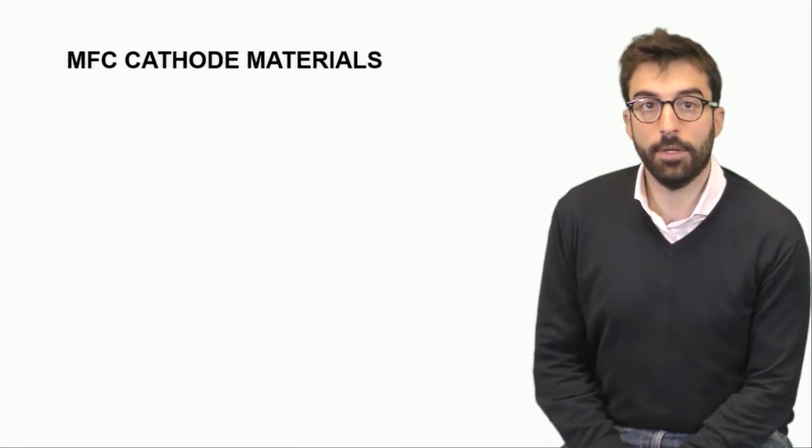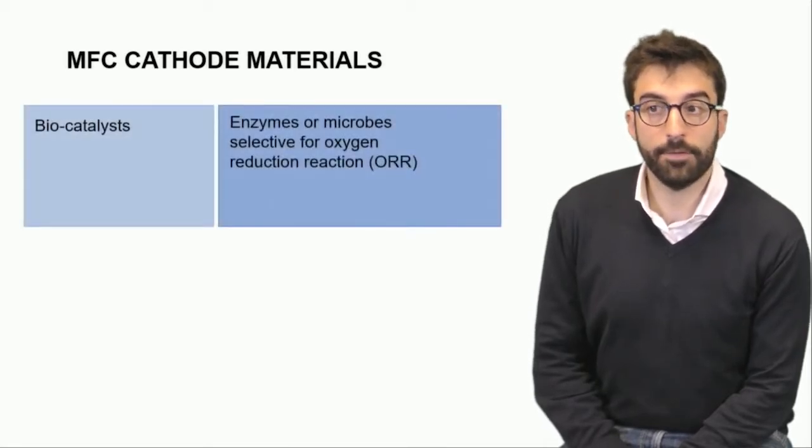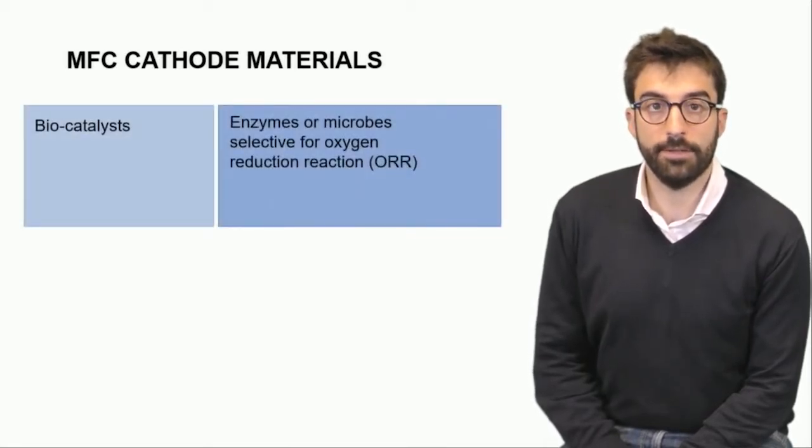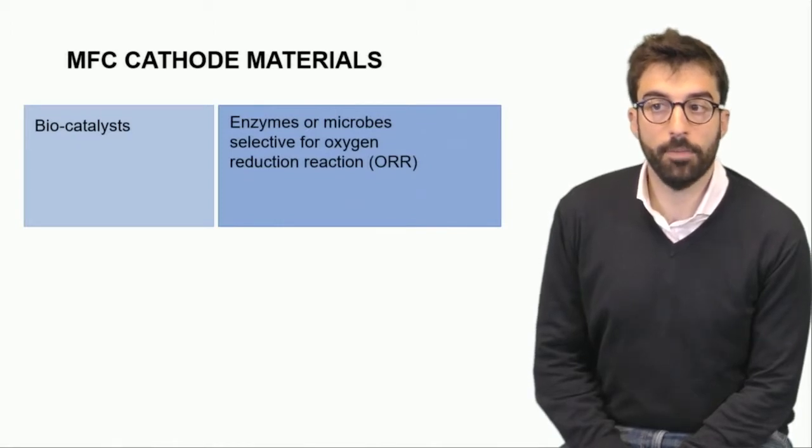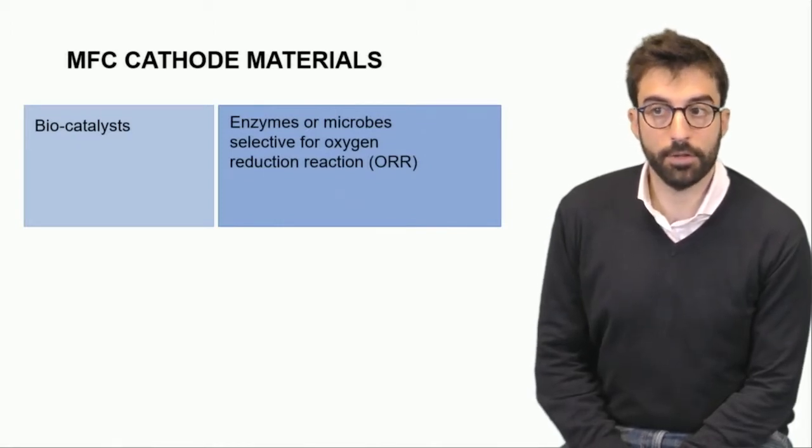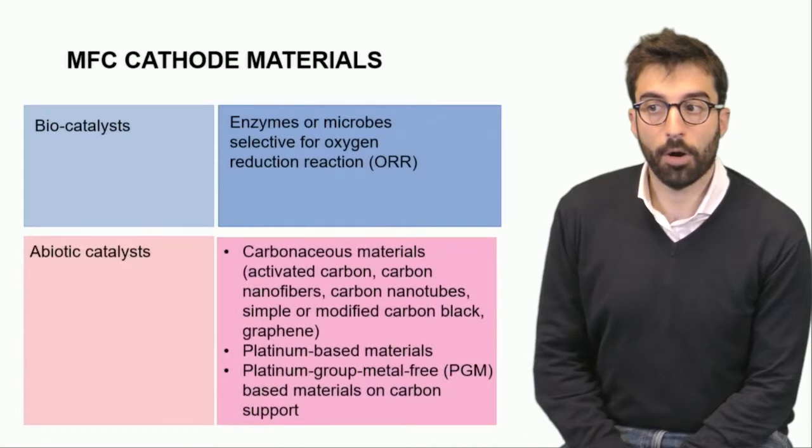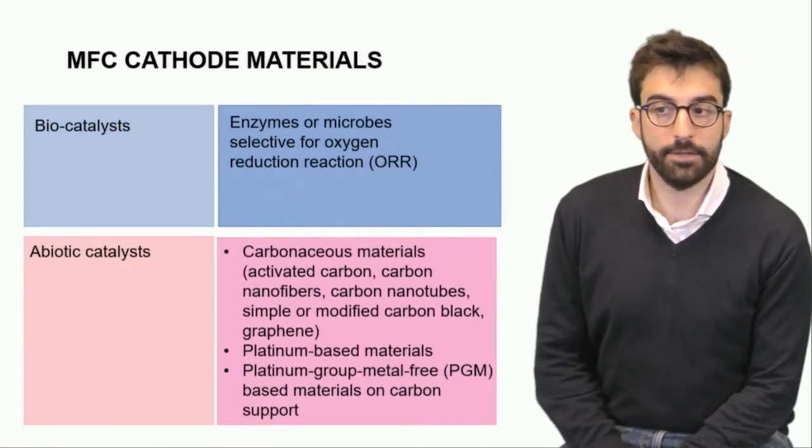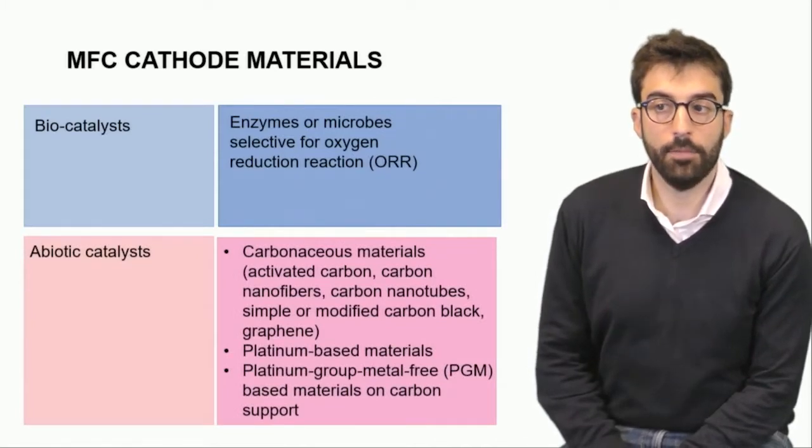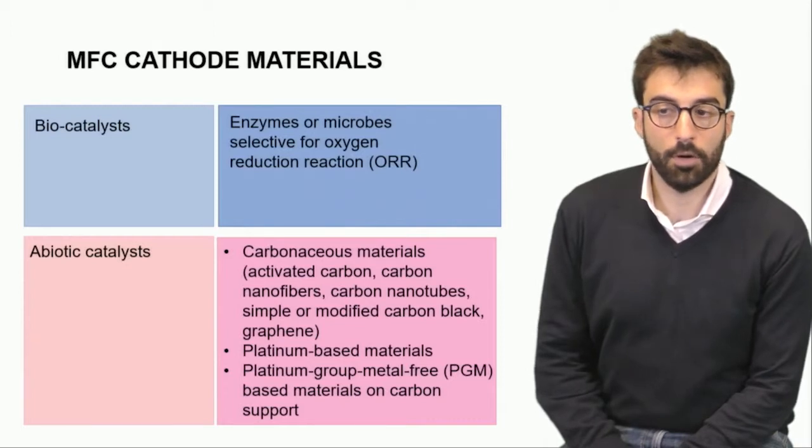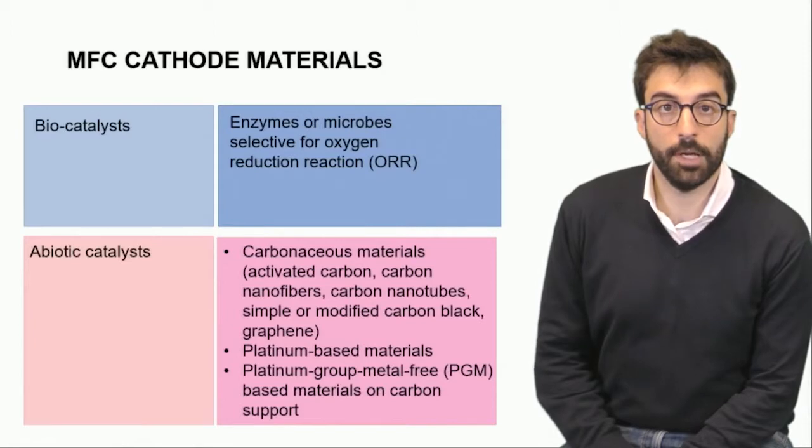For what concerns the cathode, there are two kinds of materials that can be used: biocatalysts, for example enzymes or microbes selected for oxygen reduction reaction, or abiotic catalysts, so carbonaceous materials again can be used like activated carbon or graphene, and platinum-based or platinum group-based materials.